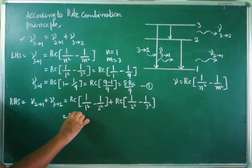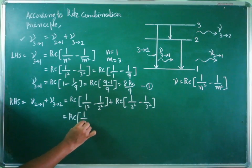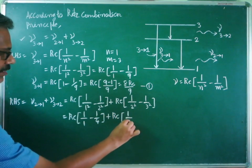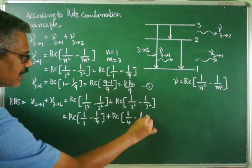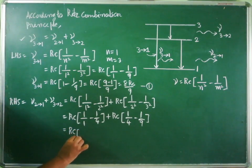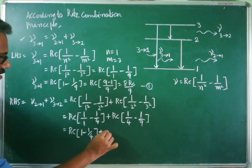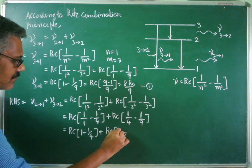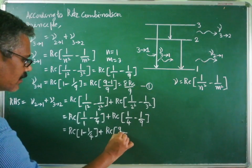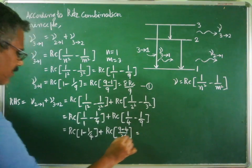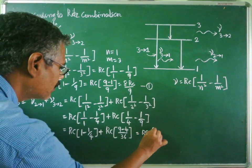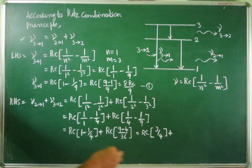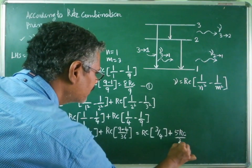In the next step, we can write Rc times 1 by 1 minus 1 by 4, plus Rc times 1 by 4 minus 1 by 9. This simplifies to Rc times 1 minus 1 by 4, plus Rc times the LCM of 36 giving 9 minus 4. So we get Rc times 3 by 4 for the first part, and 5Rc divided by 36 for the second part.